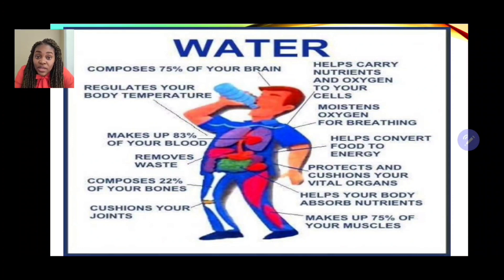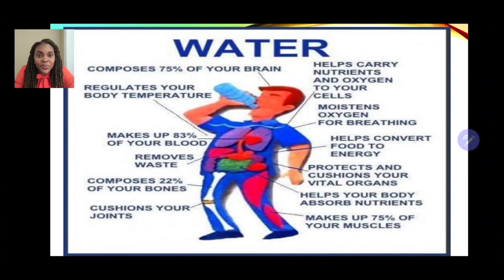Water removes waste from our bodies, makes up about 83 percent of our blood, and regulates your body temperature. When we're hot and exhausted, our body produces sweat — water — so it can cool our body down. Water is also composed of 75 percent of our brain.